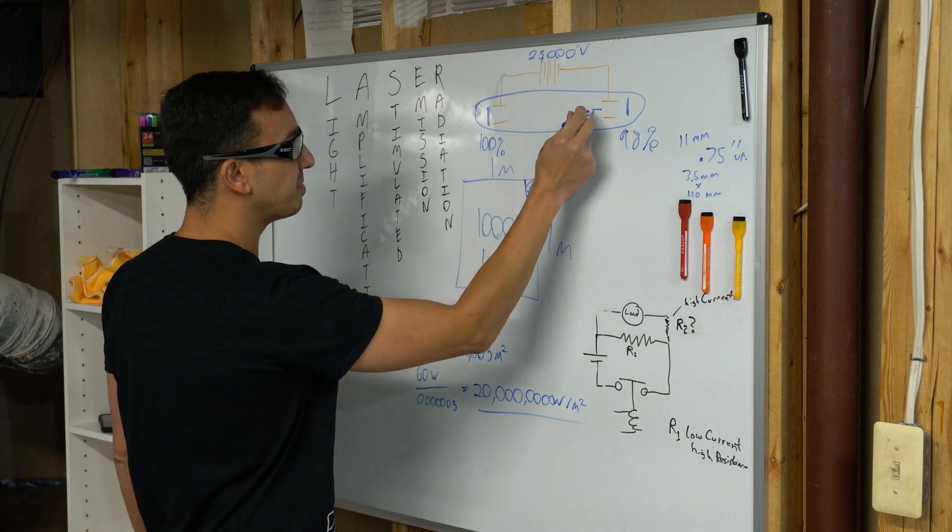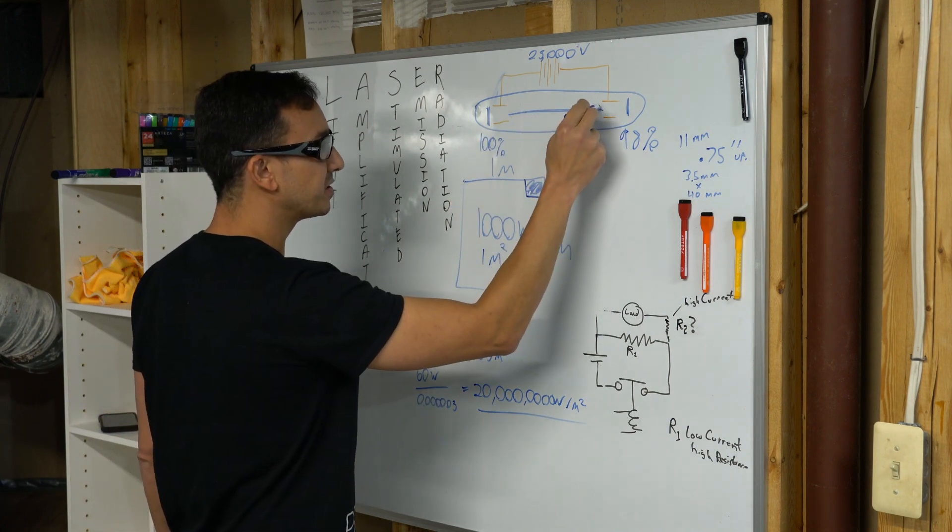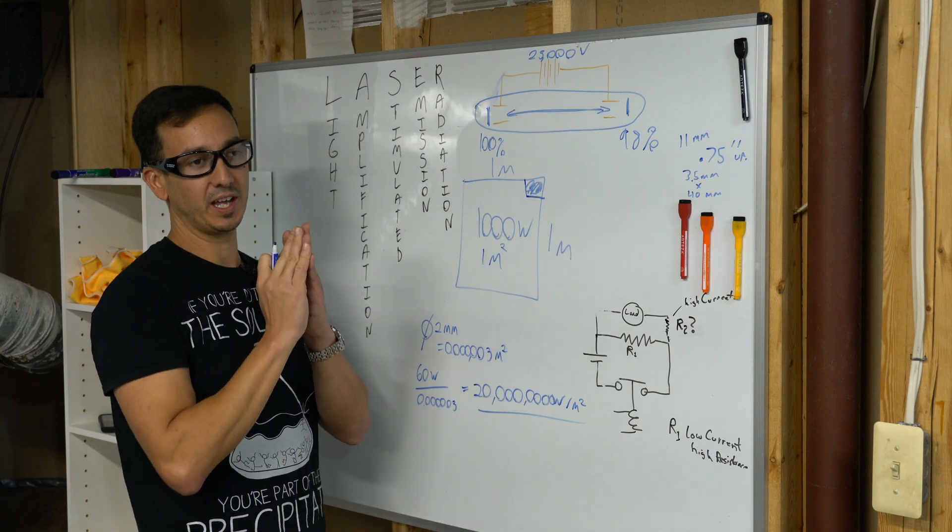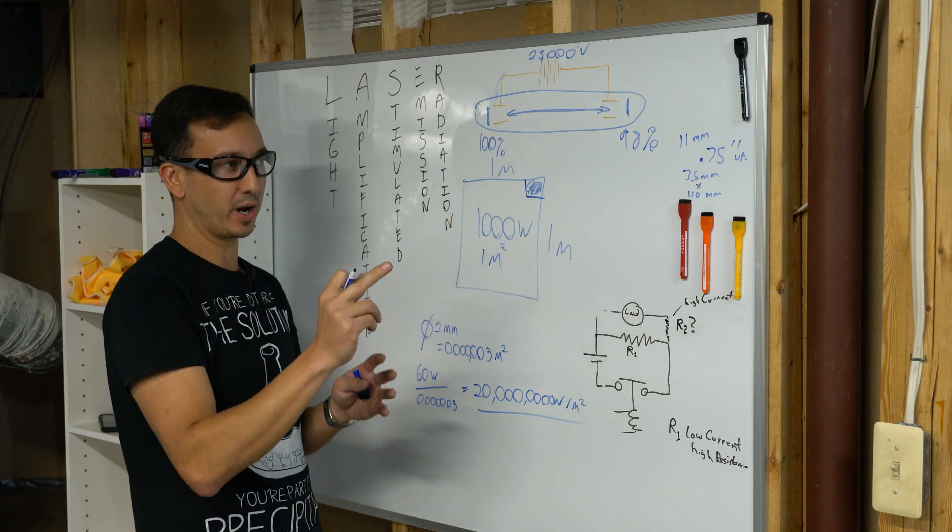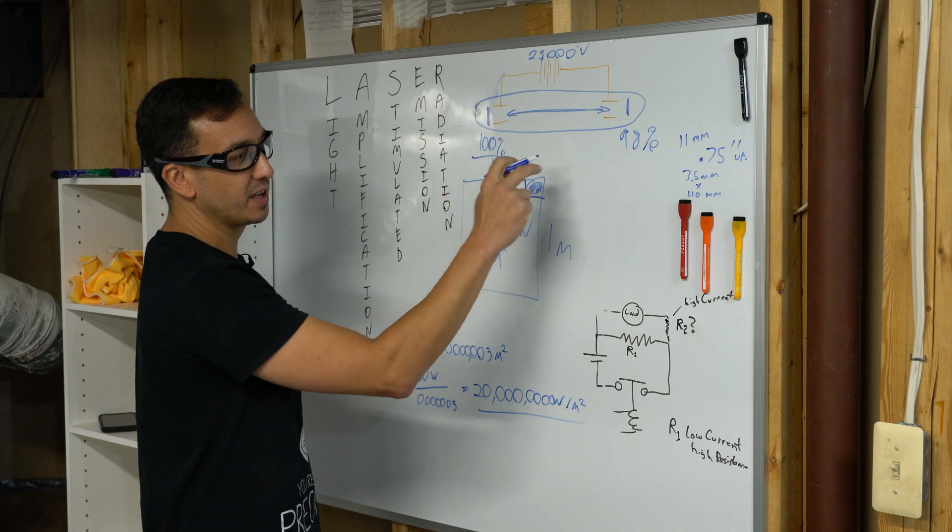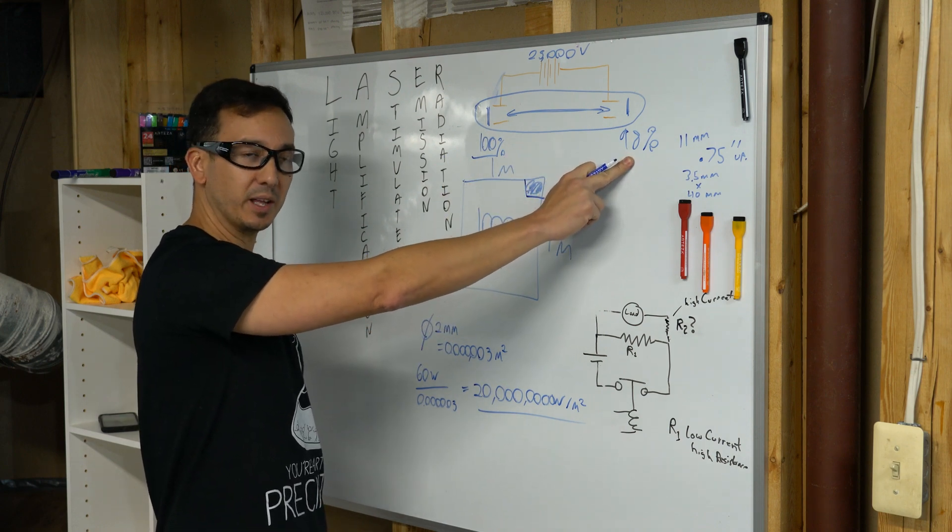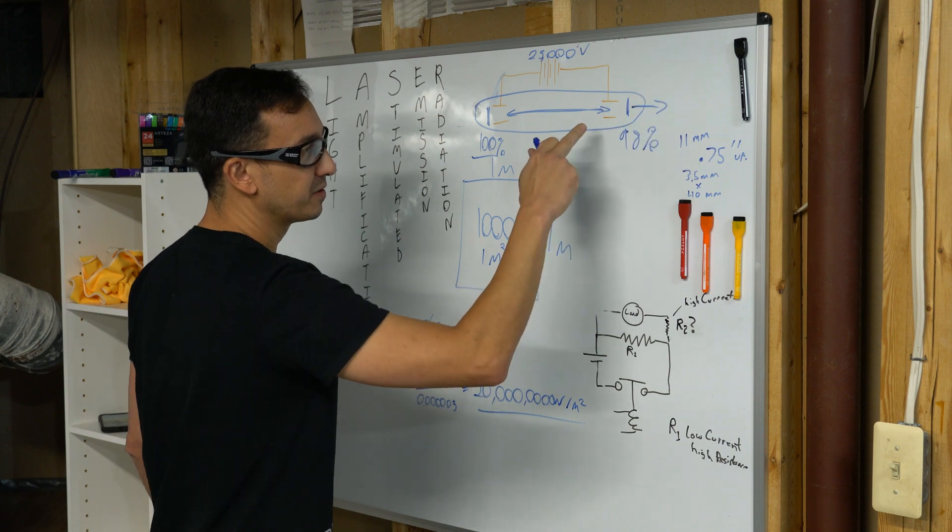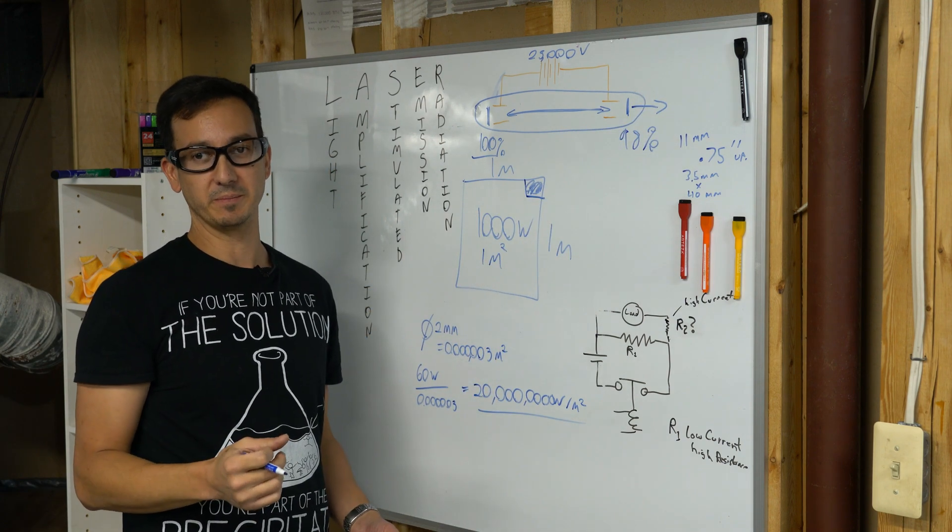And as the light bounces back and forth between these mirrors, it starts to become coherent, which is to say, all of the light is moving in the same direction. One of the mirrors is 100% reflective, the other one 98% or 99%. So, from the mirror that is not completely reflective, we get a light beam, a coherent light beam.